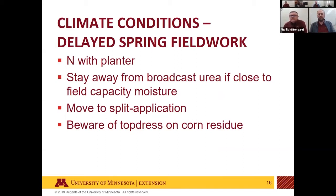If you didn't get nitrogen applied, prioritize planting the crop first. If it's corn on corn you should try to get some nitrogen on before planting; if it's corn following beans, just get it planted. There's infrastructure to apply in-season nitrogen, and consider putting some on with the planter to cover part of your needs and come back later. Also, avoid surface broadcasting urea near field capacity — if water can't penetrate and urea dissolves into runoff, you've lost your nitrogen off-site.